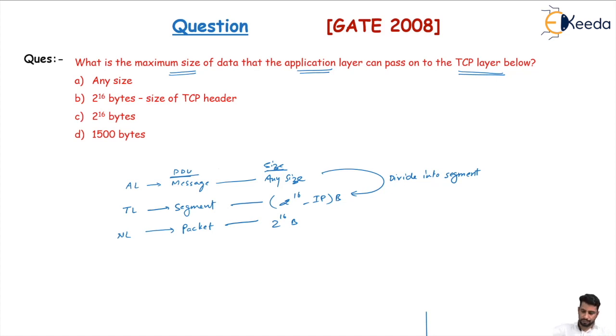So any size of data can be passed by the application layer to the transport layer. The correct answer is option number A.